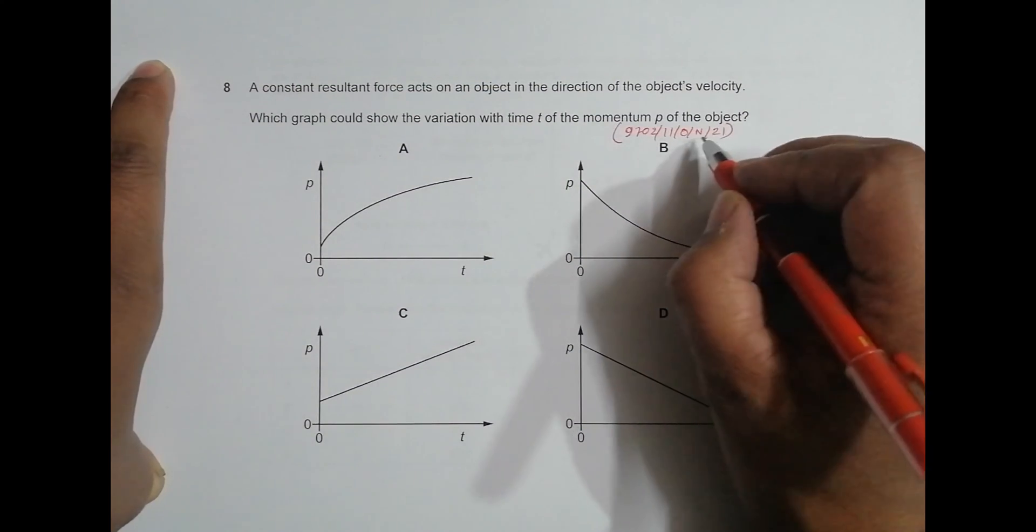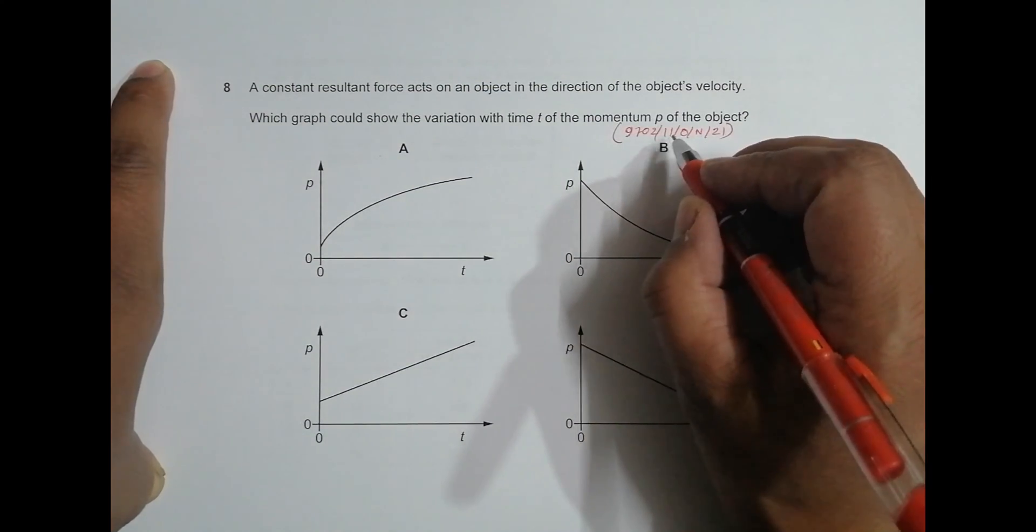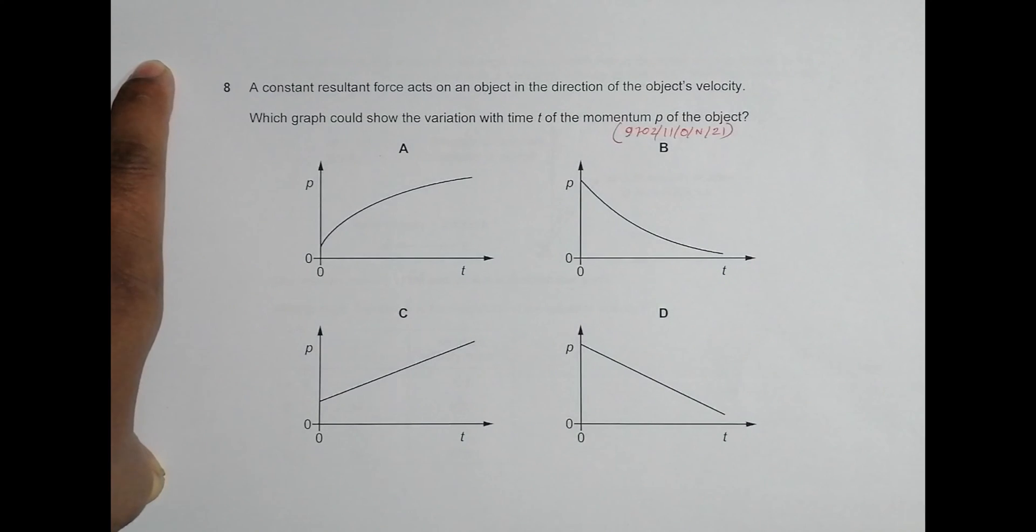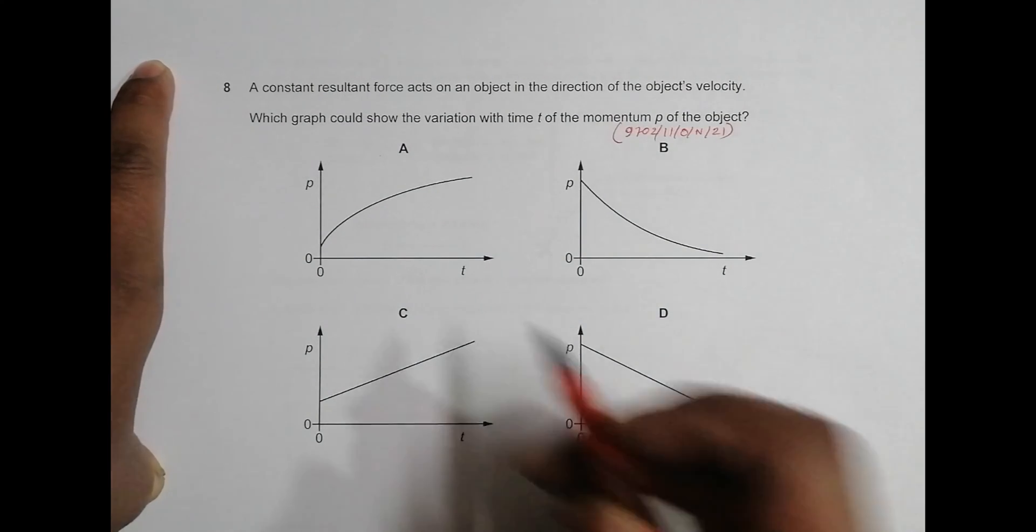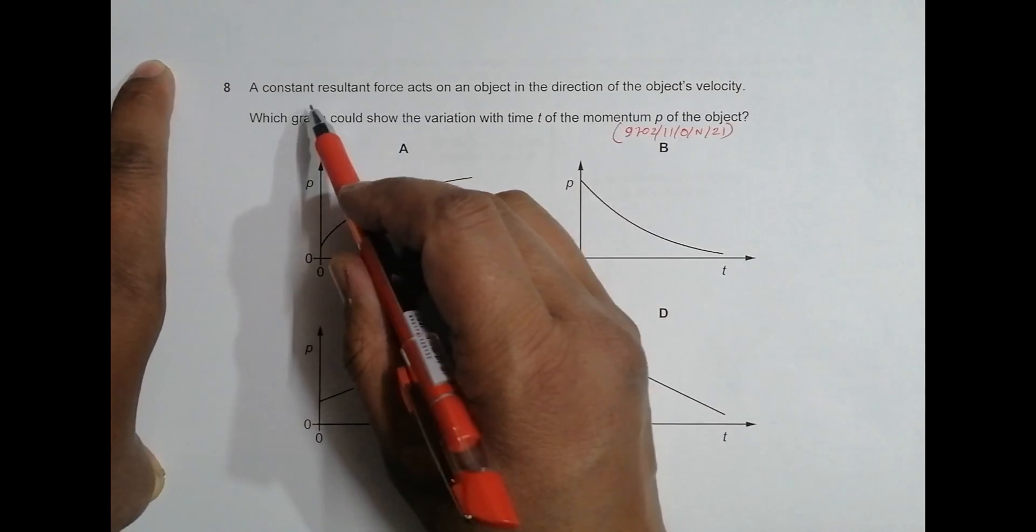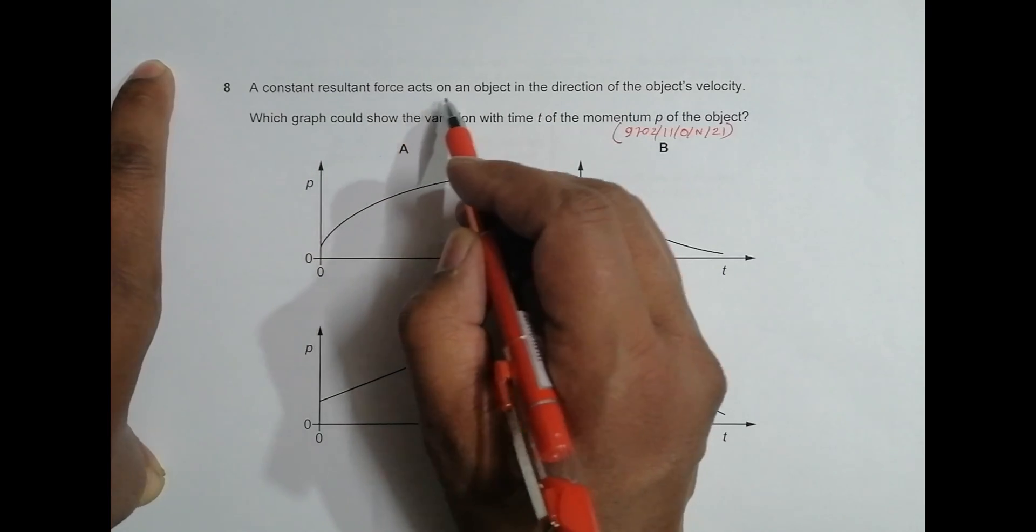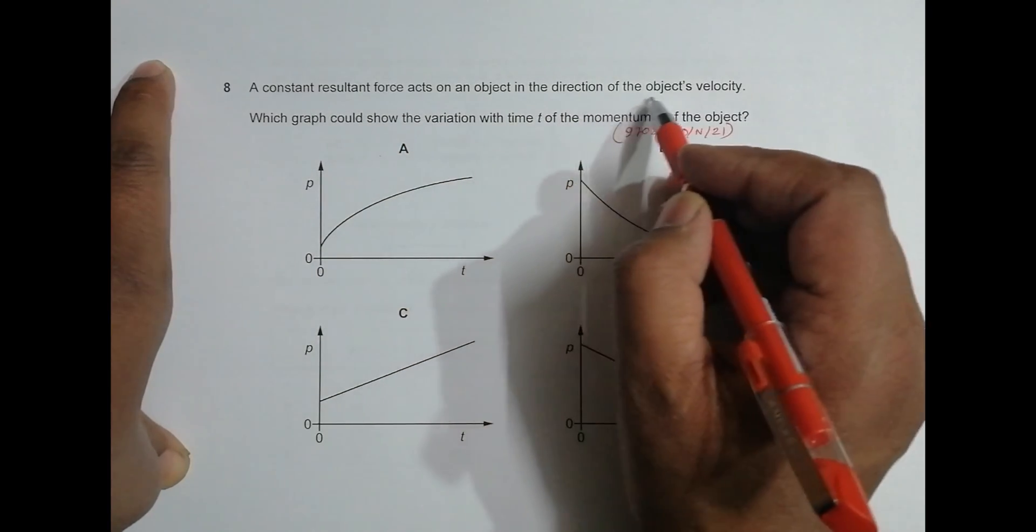Hello folks, this is 2021 October November paper 1, question 1. The question is concerned with the chapter dynamics. It says a constant resultant force acts on an object in the direction of the object's velocity.